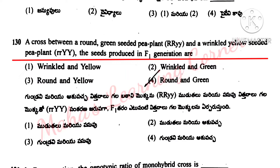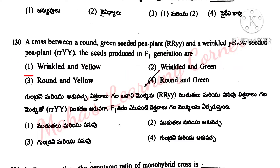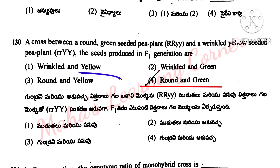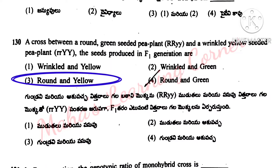A cross between a round green seeded pea plant (RRGG) and a wrinkled yellow seeded pea plant (rrgg). Options: wrinkled and yellow, wrinkled and yellow, round and yellow, round and green. Correct option is option 3: round and yellow.